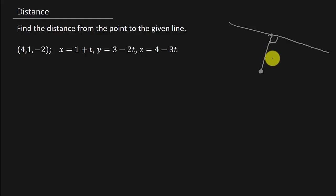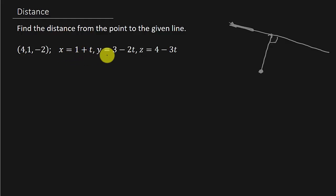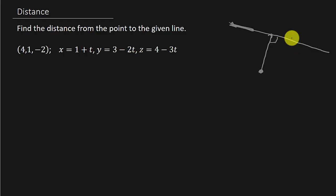This line has parametric equations: x equals 1 plus t, y equals 3 minus 2t, and z equals 4 minus 3t. I can pick a value for t and that will give me a point. So if t is 0, that gives me the point (1, 3, 4) on the line.